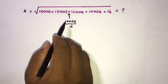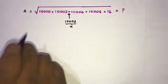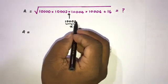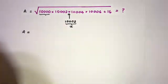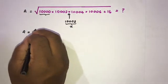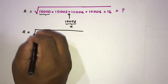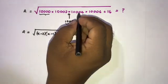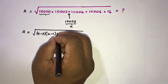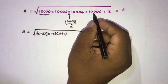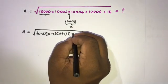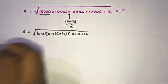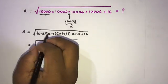Now we can use the difference of two squares. We can write A as the square root of: (x minus 3)(x minus 1)(x plus 1)(x plus 3), plus 16.